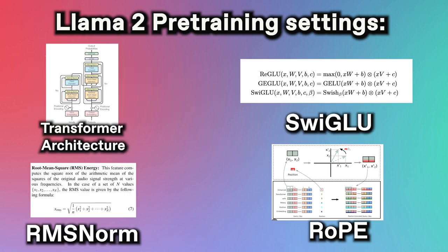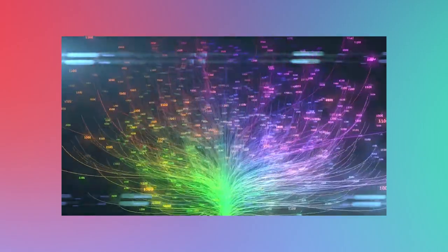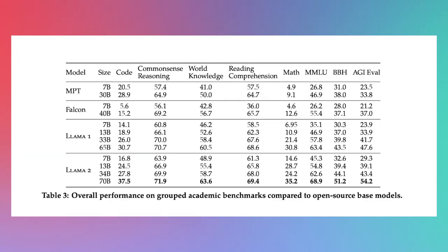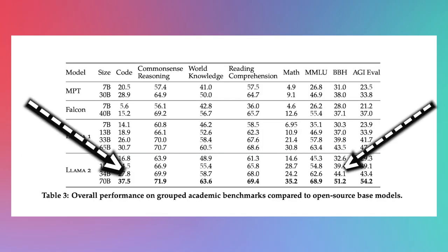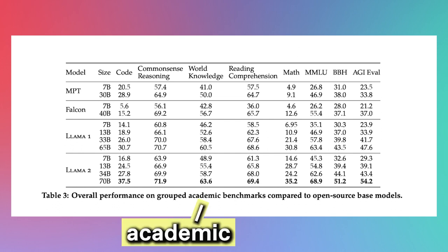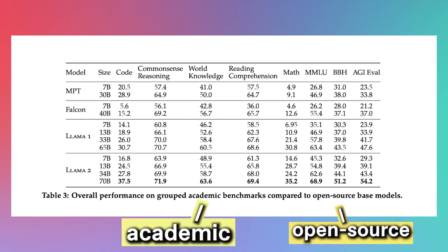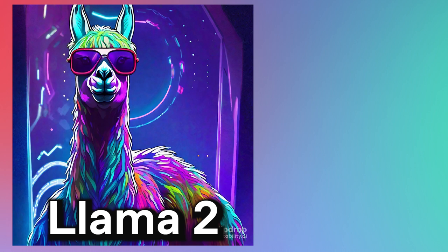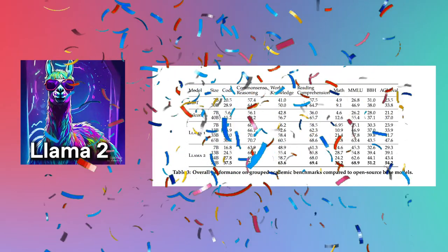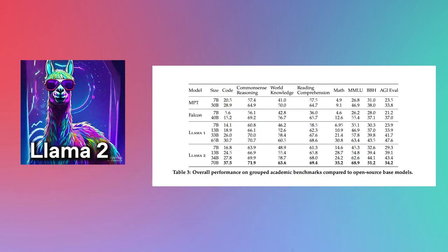After training, we can see how Llama 2 performs across popular benchmarks: coding, common sense reasoning, world knowledge, reading comprehension, math, and more. On Table 3 in the paper, Llama 2 has the highest scores across all benchmarks compared to other open-source models, as indicated by the bold numbers on the bottom row. However, when comparing to closed-source models, there's a different story.